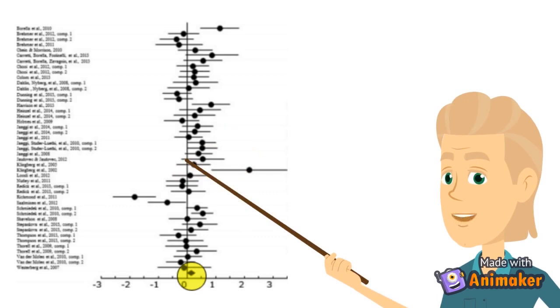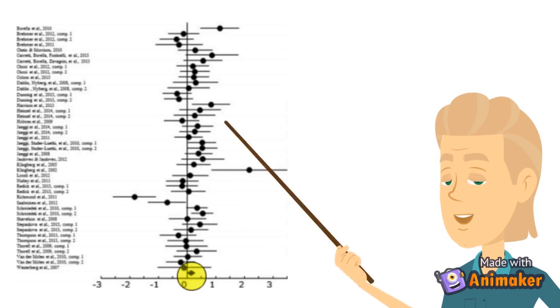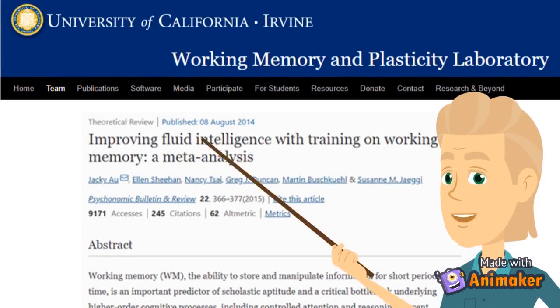Each dot is the average effect size of a study and each line is the spread of individual scores in that study. At the bottom, you can see the average effect size for all the studies. This kind of overview study is a meta-analysis.